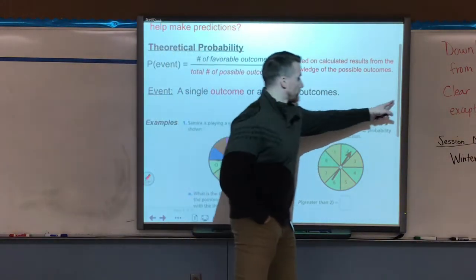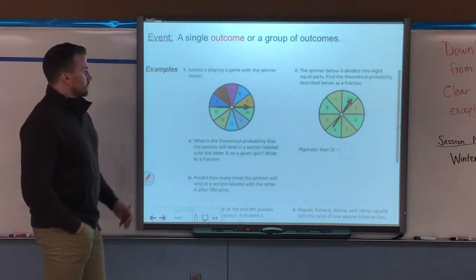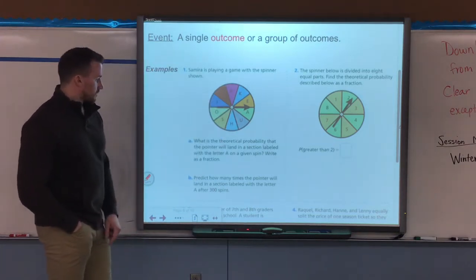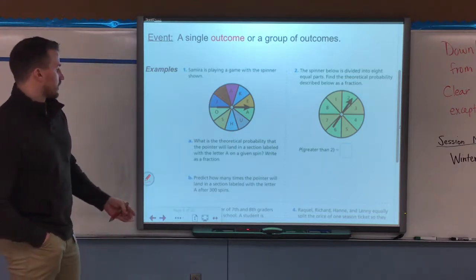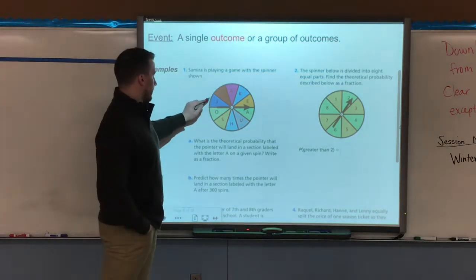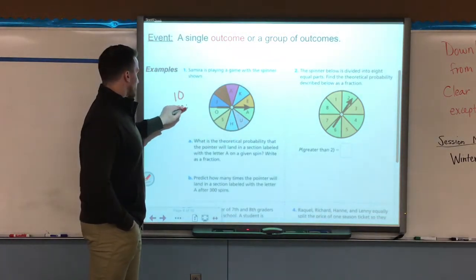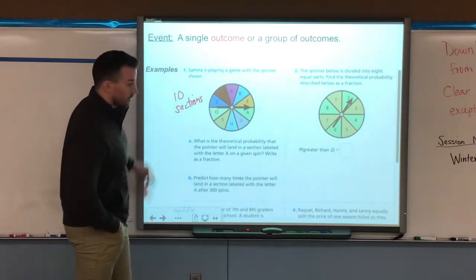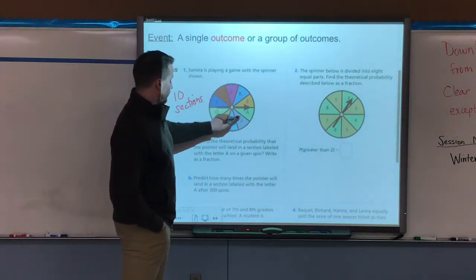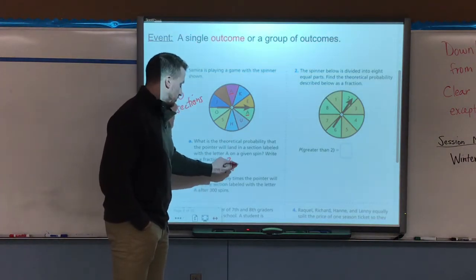So let's get to our examples here. We've got a lot of examples to get through. Example one says Samira is playing a game with a spinner shown with all these letters. Question A says what's the theoretical probability that the pointer will land in a section labeled with the letter A on a given spin. So I'm looking at all the total sections. So I need to know how many sections I have. There's ten sections. That's important to know that there are ten sections to the spinner, which is my total. So that's going to be my denominator for my fraction. Now how many are labeled A? Well I have one here and one here. That's two out of 10, which I can simplify to one-fifth.